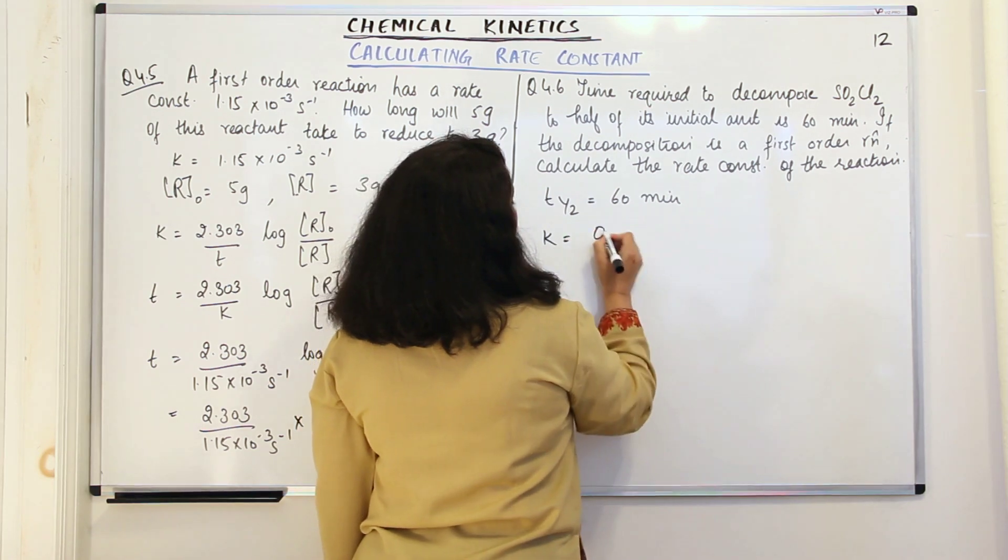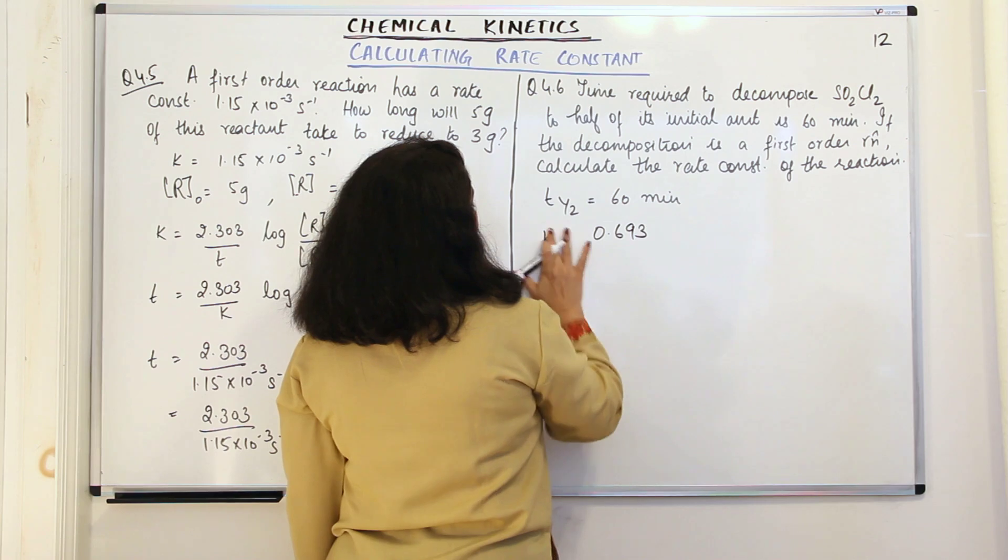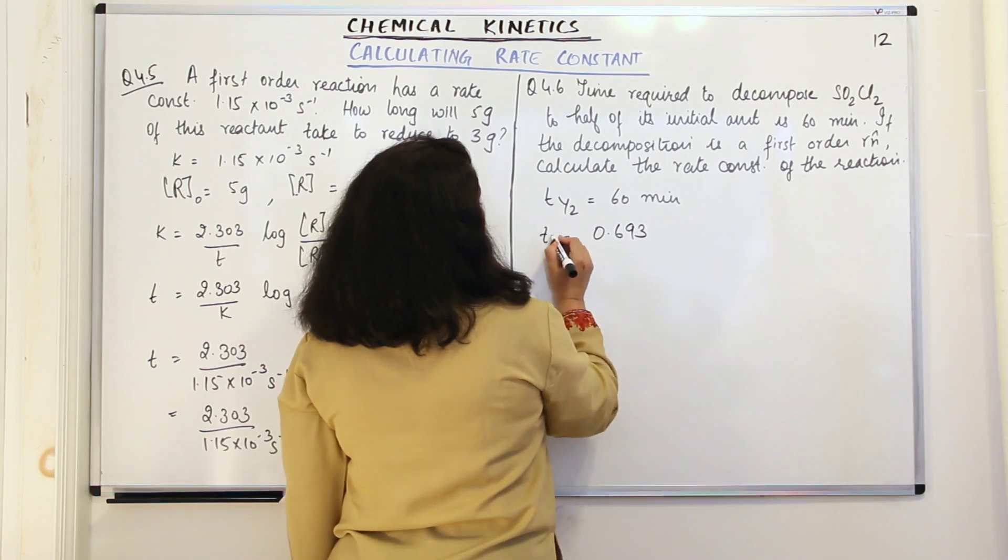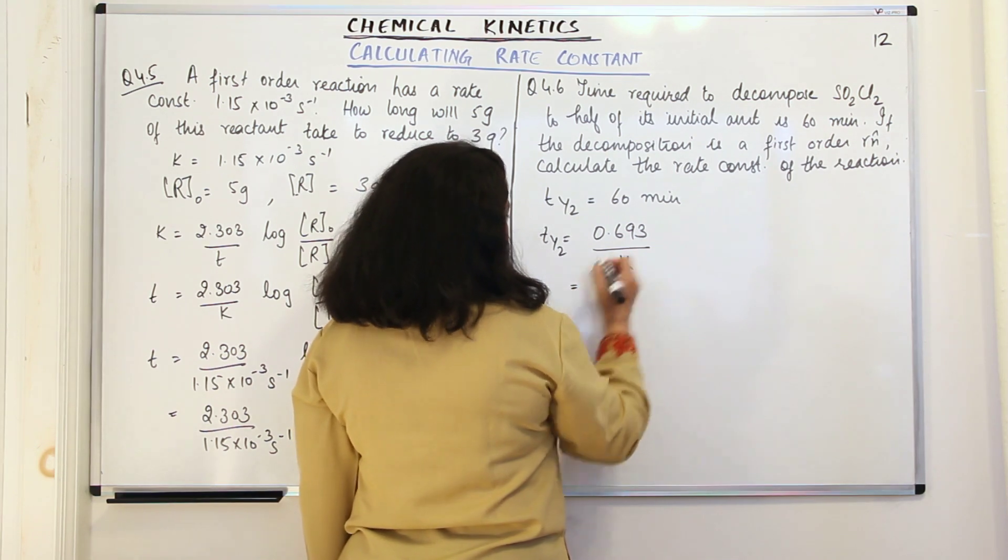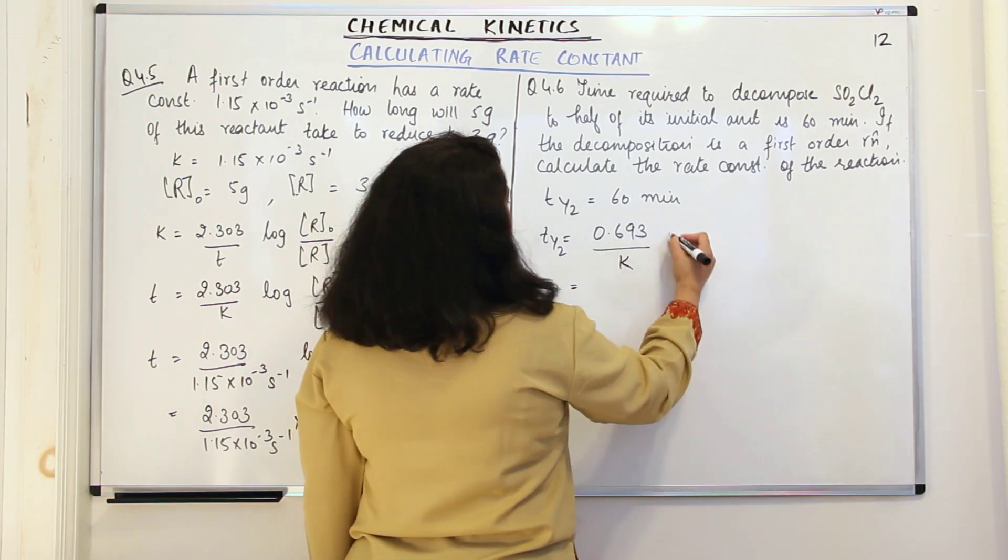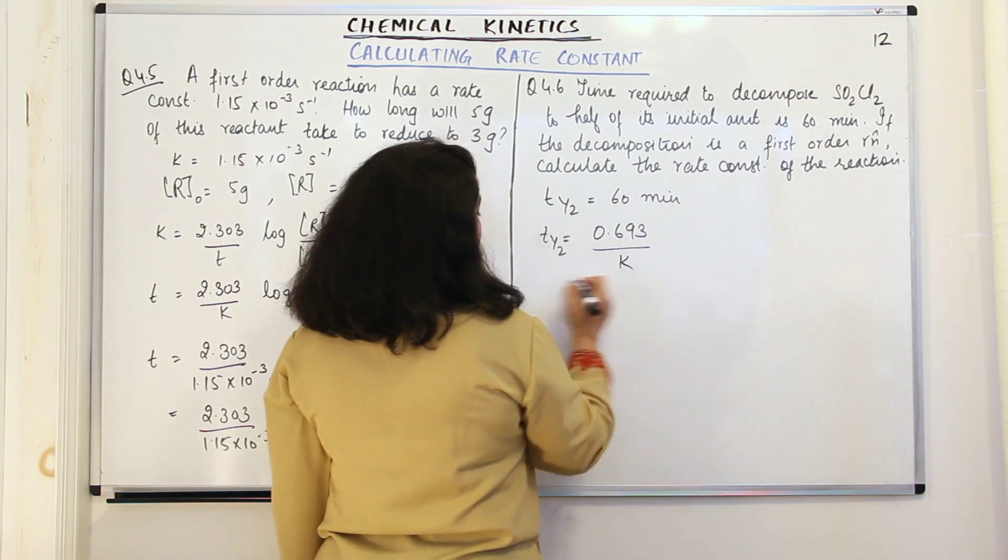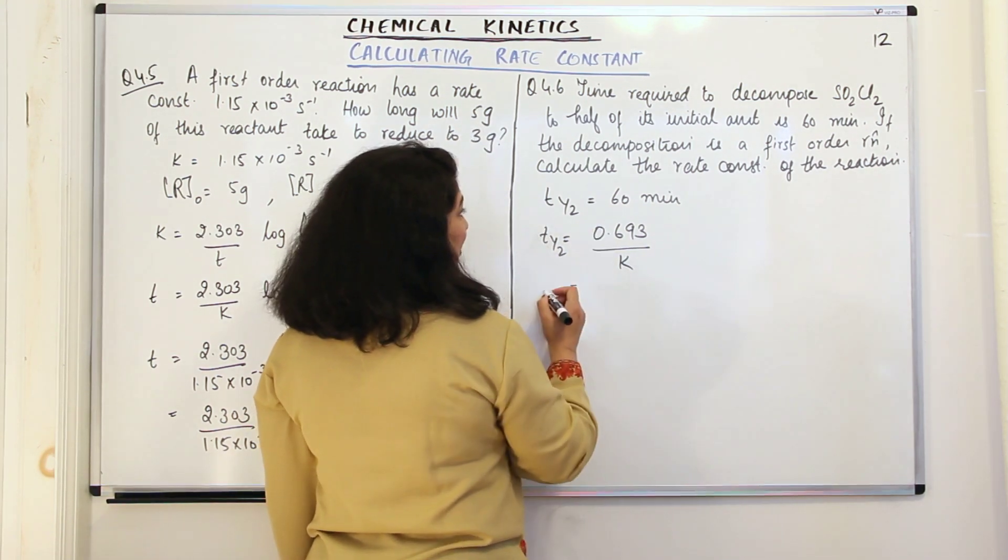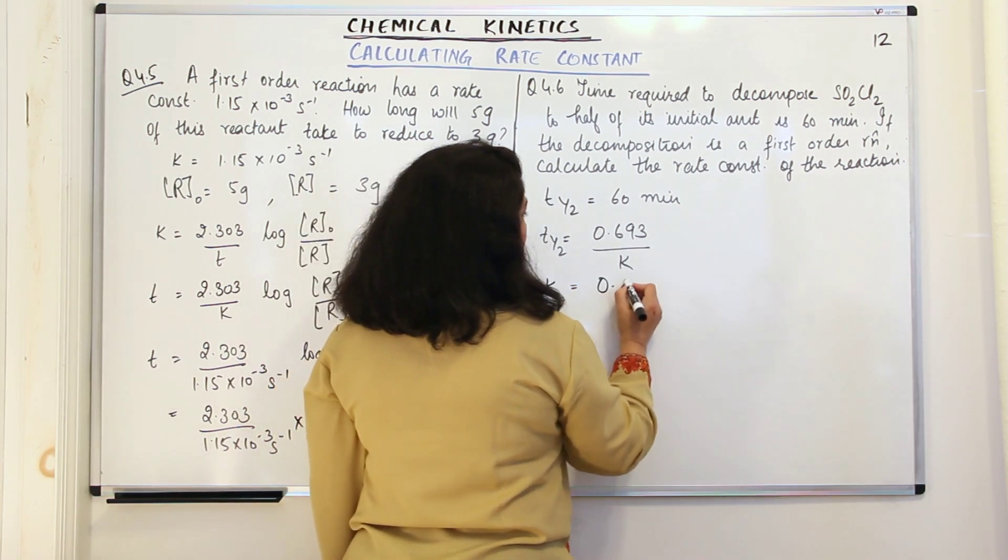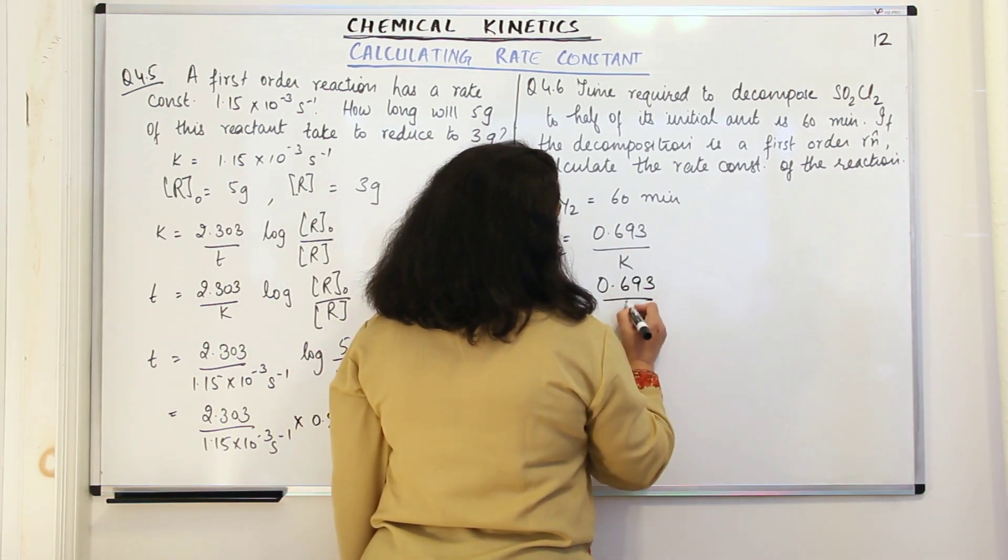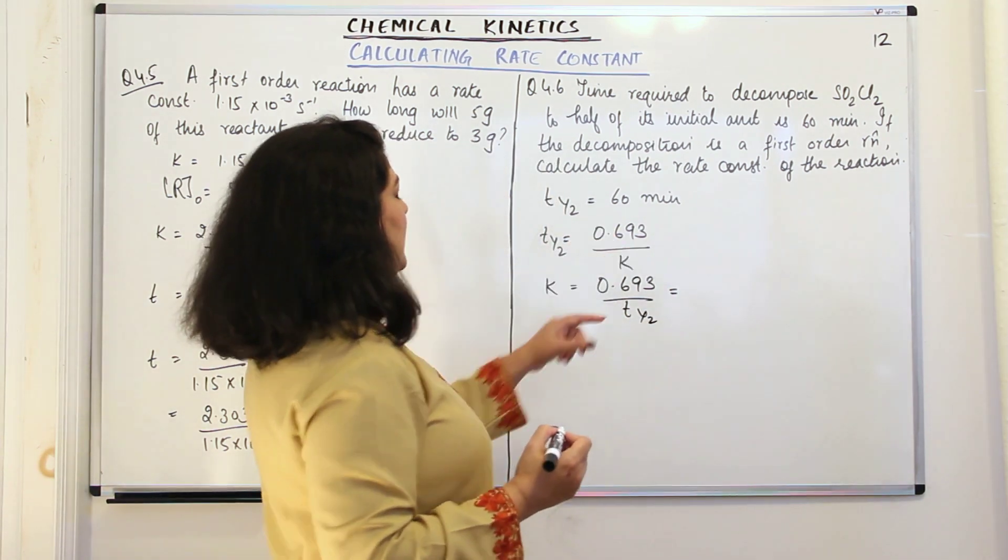For first order reaction, K is equal to 0.693 upon T half, or T half is equal to 0.693 upon K. Since it is given in minutes, this would be in minutes. Since we have to find out the value of K, we will write K is equal to 0.693 upon T half, and T half is given to us as 60 minutes.